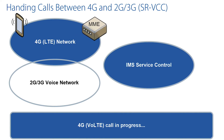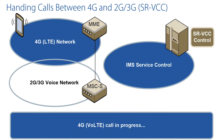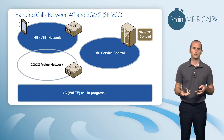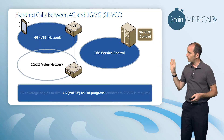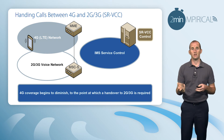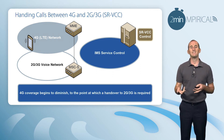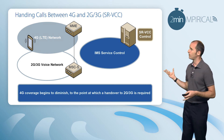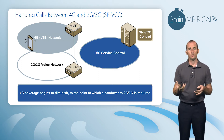The controlling entities are the Mobility Management Entity in 4G, the Mobile Switching Center Server in 2G or 3G, and the SRVCC controller in our IMS network. We get to the point whereby our 4G coverage diminishes to the extent that the 4G access network tells our MME that we need to do a handover.